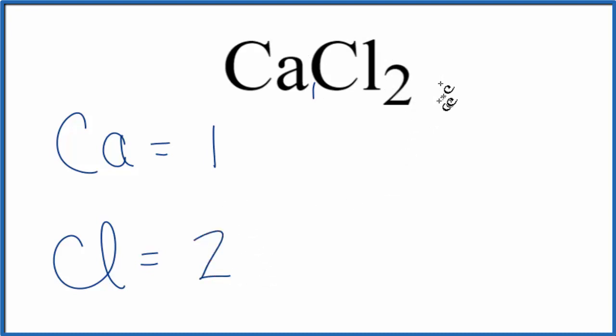If we wanted to know the total number of atoms in CaCl2, we just add these up. Two plus one, that gives us three total atoms in CaCl2.